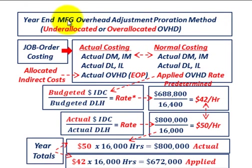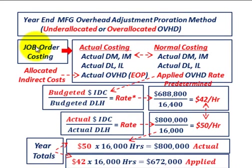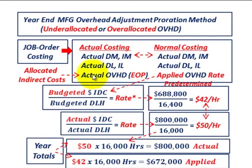What we're going to be going over here is year-end manufacturing overhead adjustment using the proration method. This is where we're going to either have under-allocated or over-allocated overhead in our product cost, and we're going to have to adjust for that within the job order costing system. For our job order costing, we would have used normal costing for the year, using the applied overhead rate — a predetermined or budgeted overhead rate — and now at the end of the year we can calculate our actual overhead rate.